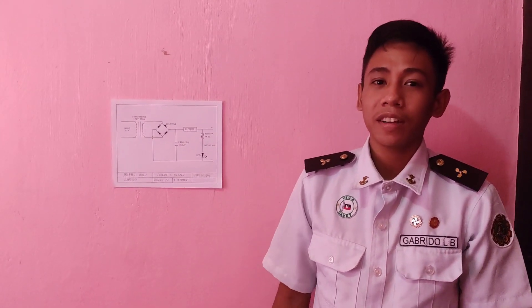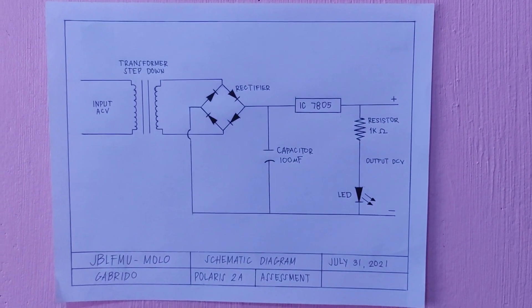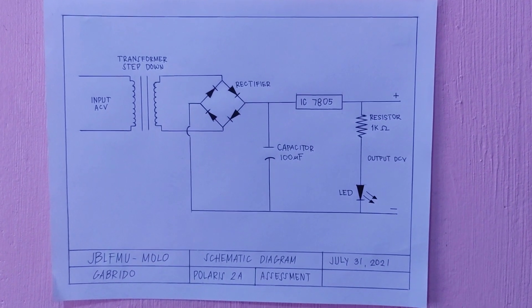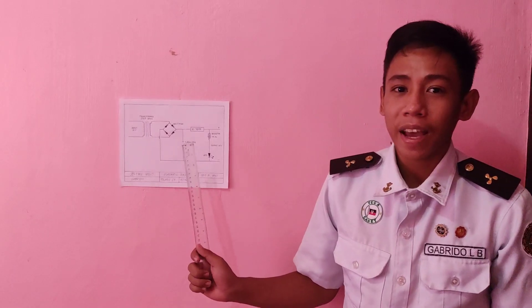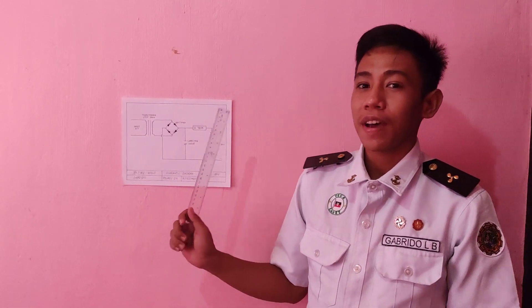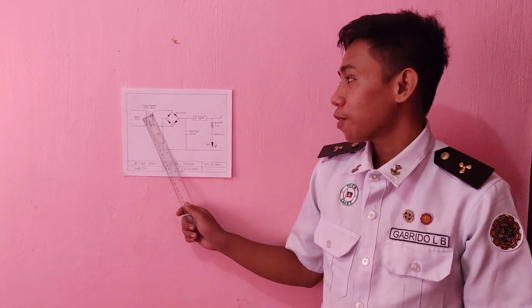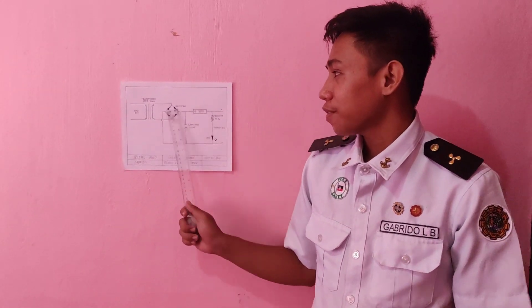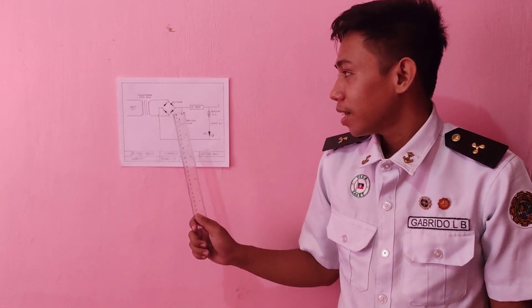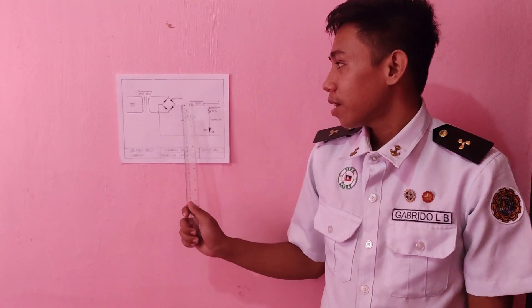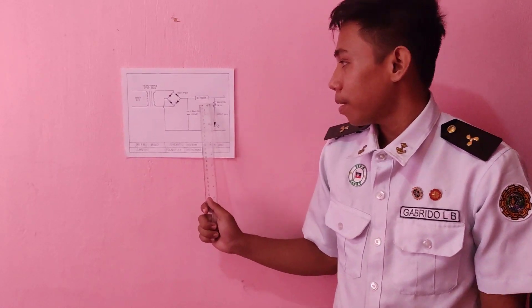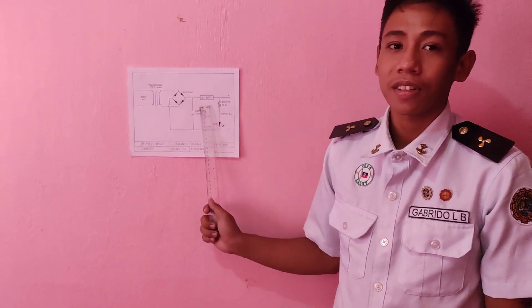Good day everyone. I'm Lemuel Vigabrido, and this is my drawing schematic diagram of a power supply. A power supply has five main components: transformer, rectifier, capacitor, IC7805, and resistor.